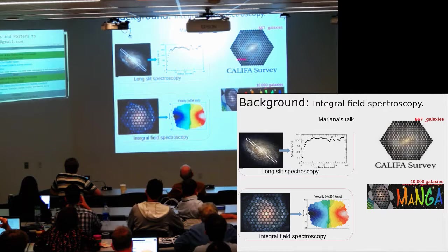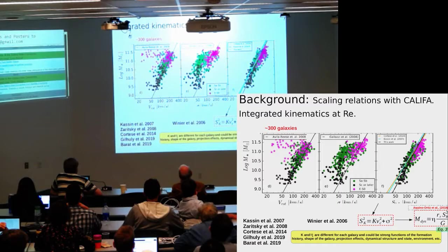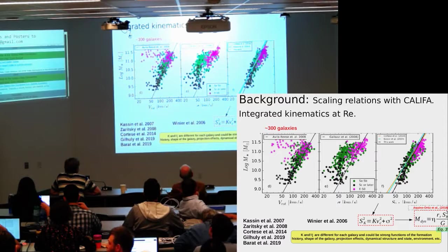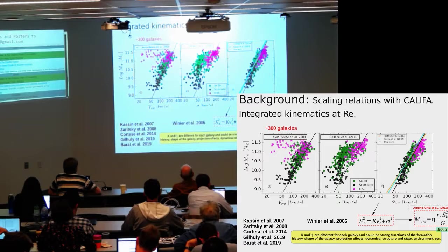In this project, we are using the final data release of the CALIFA survey, 667 galaxies, and also the MaNGA sample. As background, in my published paper Aquino-Ortiz 2018, we explore kinematic scaling relations using more or less 300 CALIFA galaxies — using integrated kinematics at one effective radius and also spatially resolved kinematics. The motivation was the fact that the internal kinematics of galaxies is more complex than only rotation in spiral galaxies or only velocity dispersion in elliptical galaxies. We know that elliptical galaxies have some rotation and spiral galaxies also have random motions.